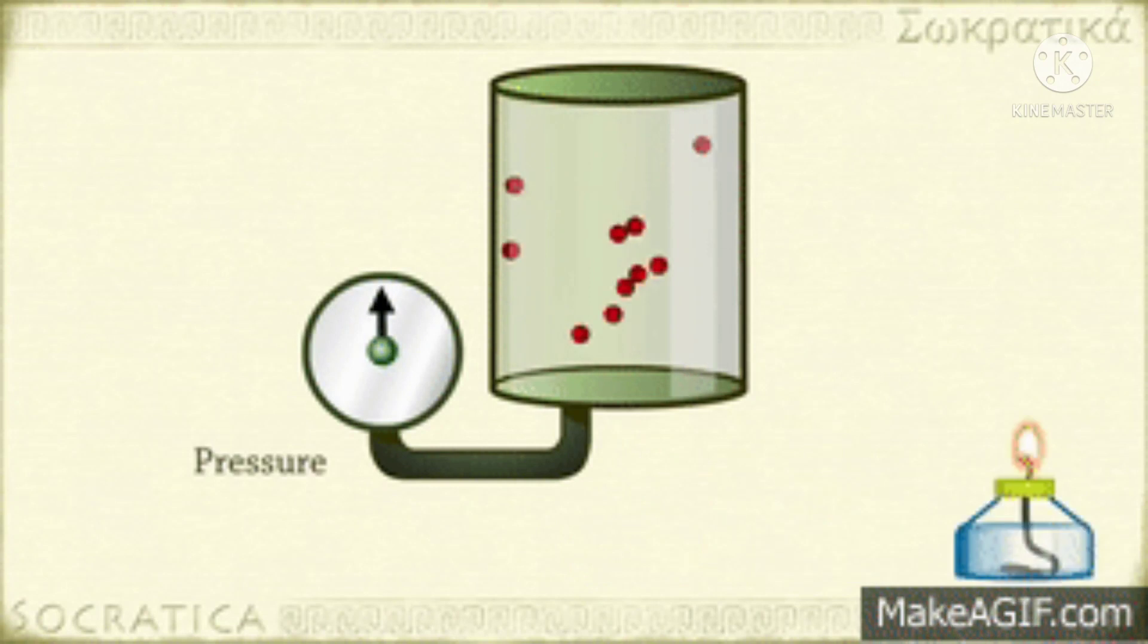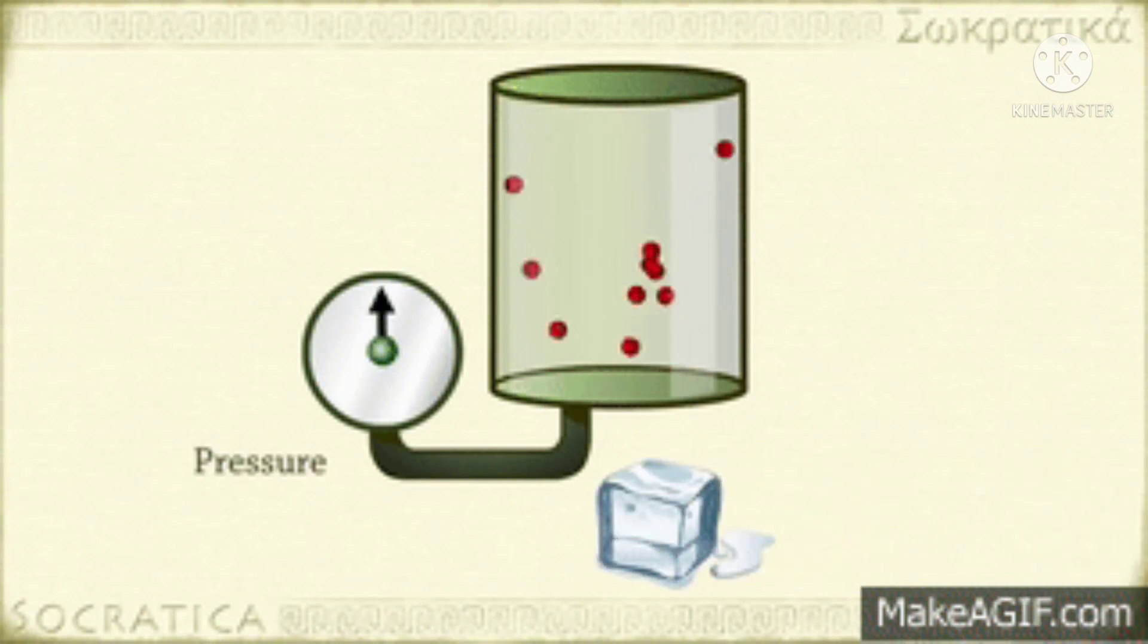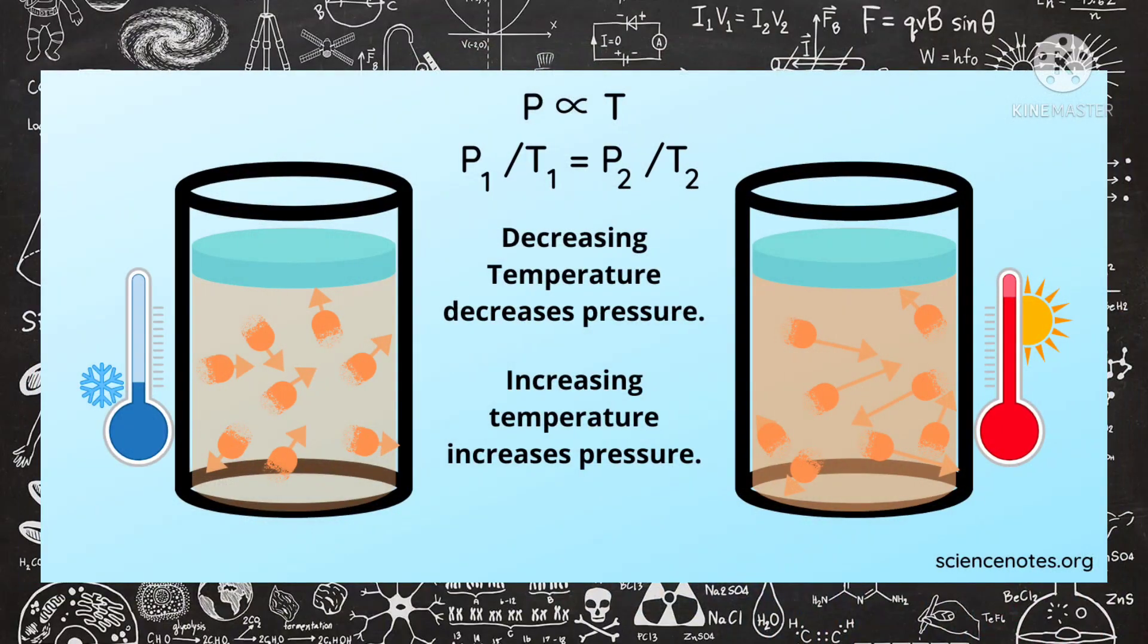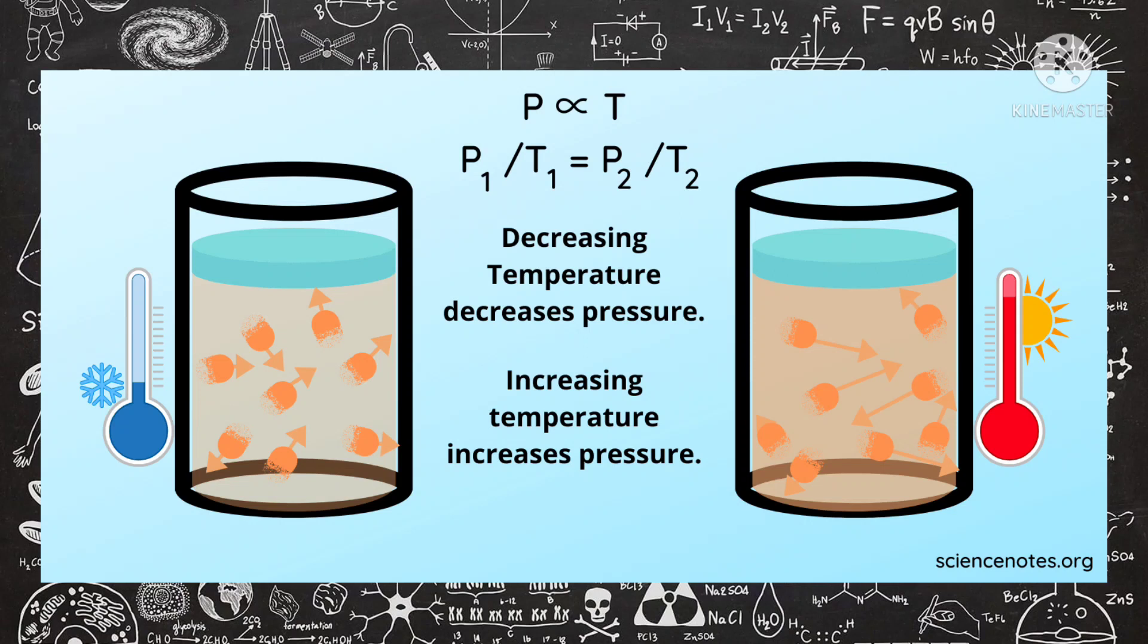On the other hand, gas molecules which are exposed to low temperature move more slowly, with less frequent and weaker collisions with the wall of the rigid container, thus resulting in a low pressure. In conclusion, low temperature leads to low pressure. That explains the direct relationship of pressure and temperature.